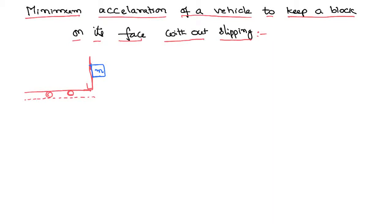Consider a lorry moving on a horizontal surface. On the face of the lorry — that is, before the driver on the glass — we would like to place a block of mass M without any support, and we don't want that block to slip down. Why would the block slip down? Obviously because its weight is always acting in the downward direction. What we need to do for this body not to slip down is to give an acceleration to this lorry. How much acceleration must we give so that the block is not going to slip down — this is the problem we want to solve.